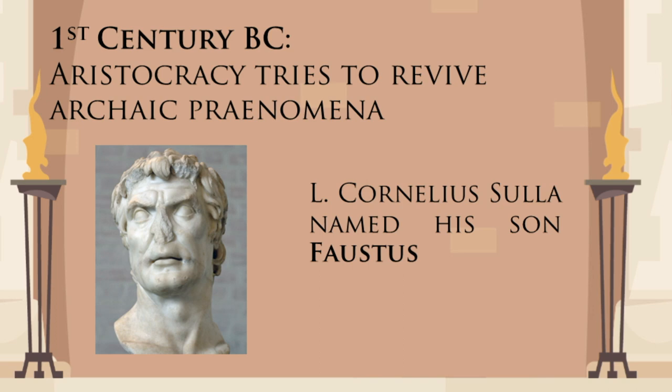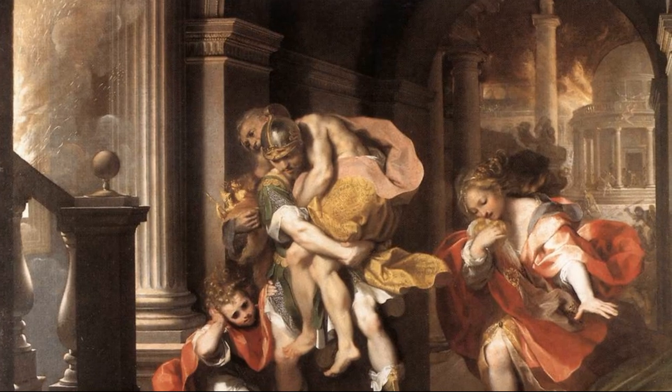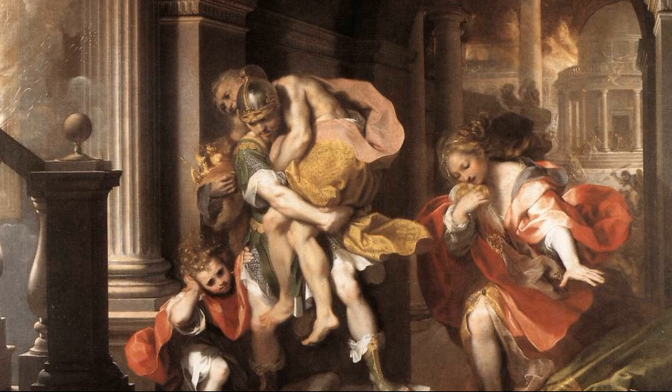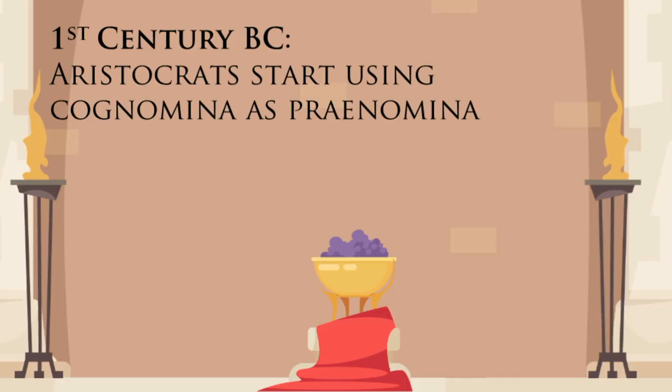One of the biggest champions of the old order, Lucius Cornelius Sulla, gave his son an unusual praenomen: Faustus. The famous Marcus Antonius named his second son Iullus — the name of a grandson of Aeneas, the hero of the Trojan War. Another aristocratic practice of that period, which served the same purpose, was to use established cognomina in place of praenomen.